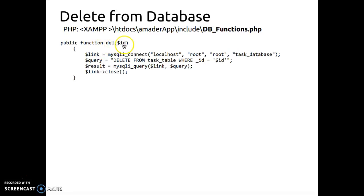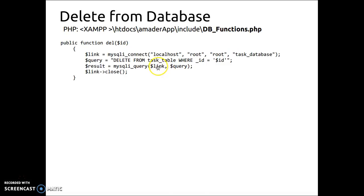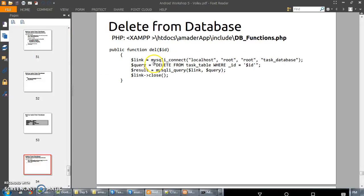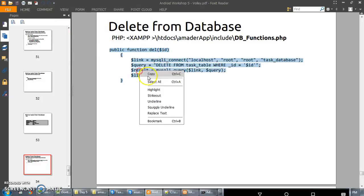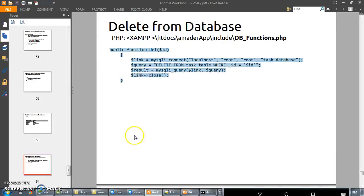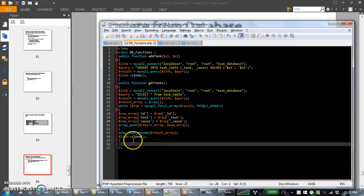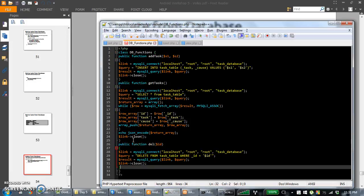This is the delete function. We will open the id. We will delete from the task table where id equals the id. We will execute it. Then we will copy it to create the db function — it will delete it.